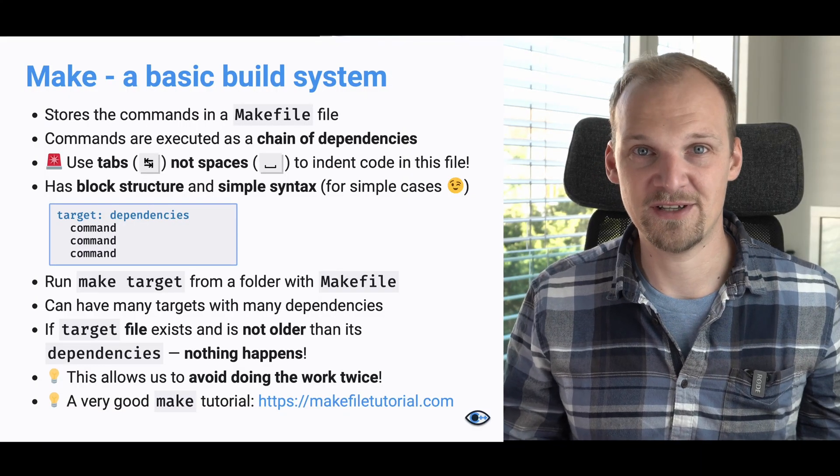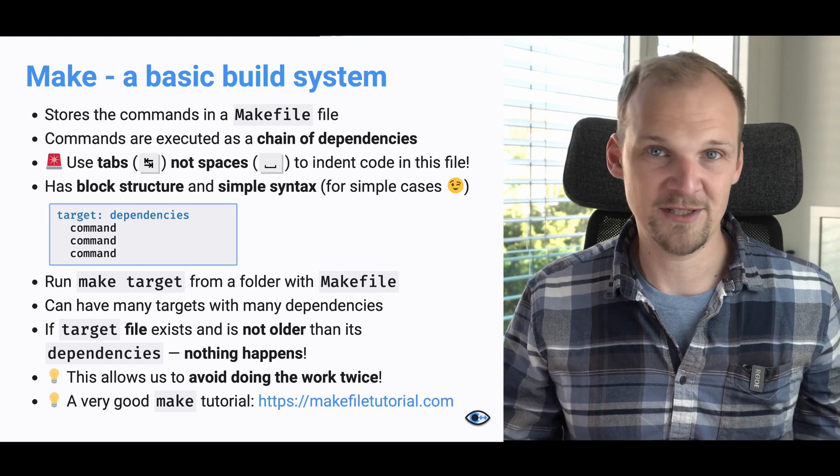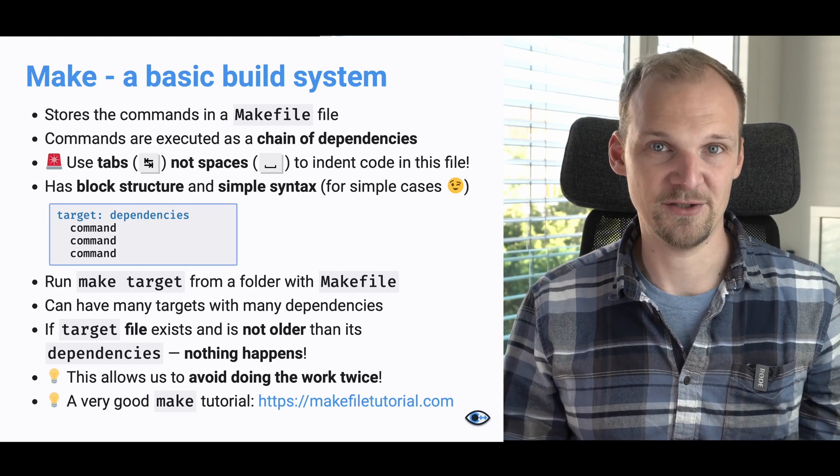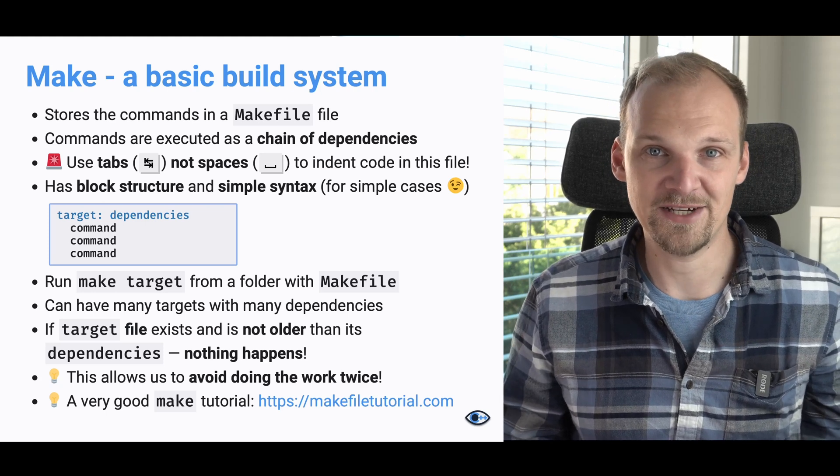After you write your makefile, you just run make target and it will execute all the commands with all the dependencies to build the target you want. And there can of course be many targets with many dependencies. The cool thing about make is that while being pretty simple, it still does some fancy things. For example, it will do nothing if your target already exists — it assumes a target is just a file. But not only does it check that it exists, it also checks if it's new enough. So if one of your dependencies changes and is now newer than the target by timestamp, it will know it has to redo all the work again. It's a really nice feature to avoid recompiling things again and again.